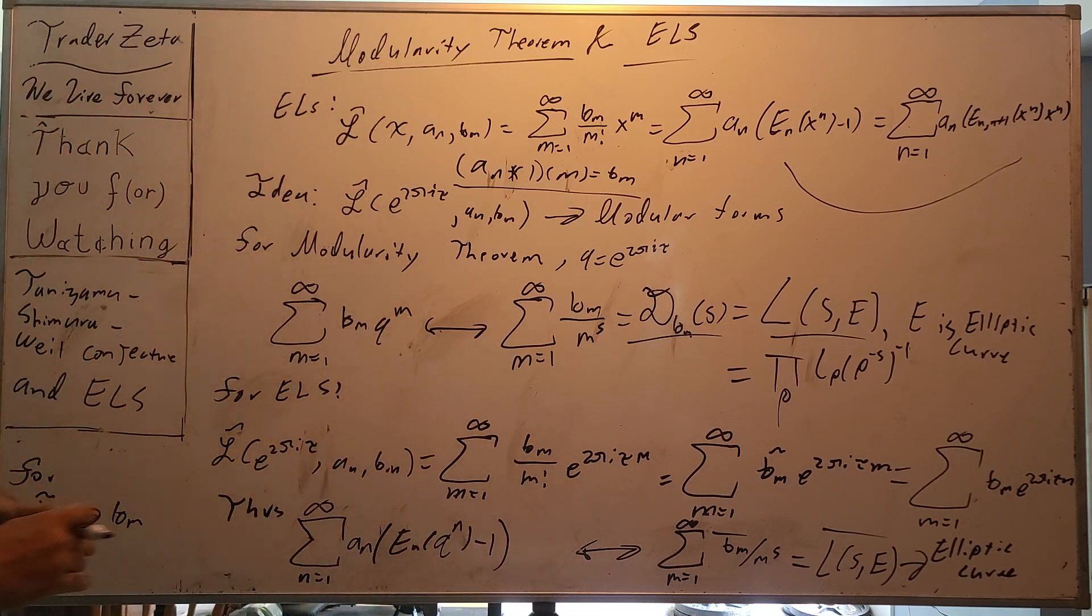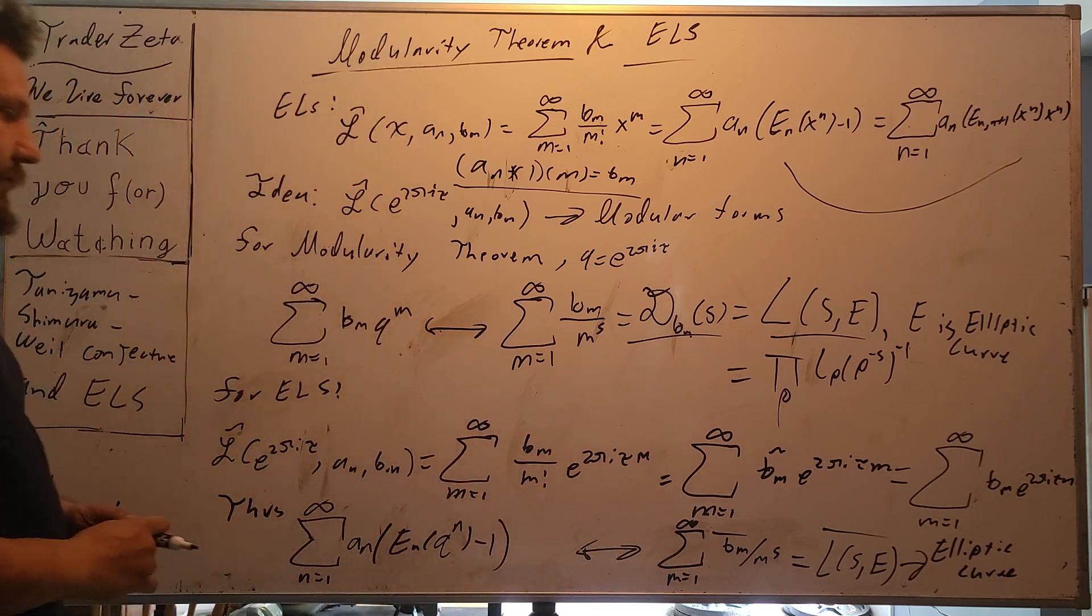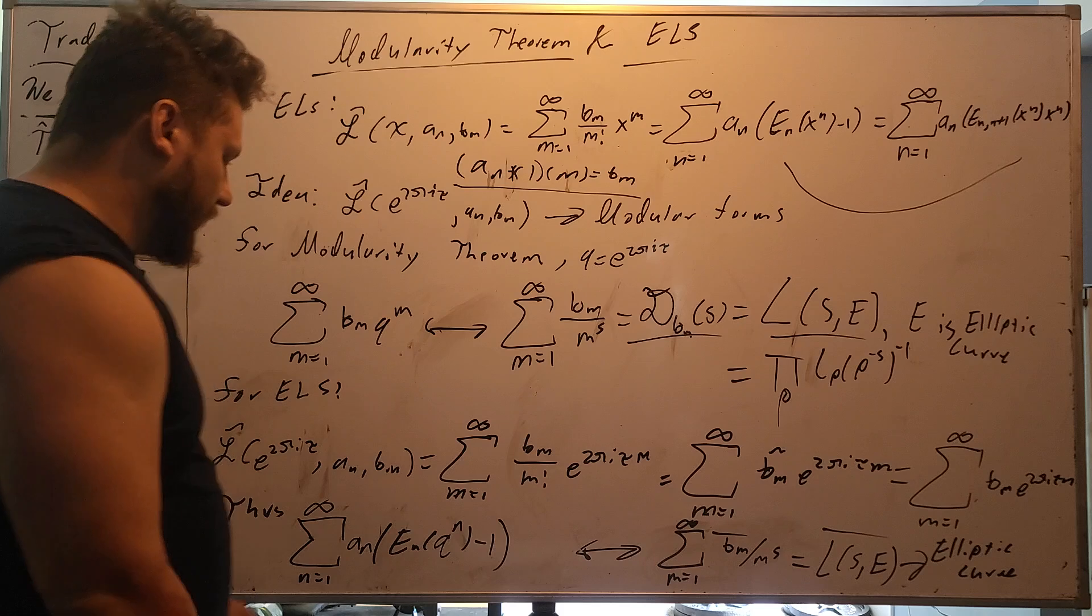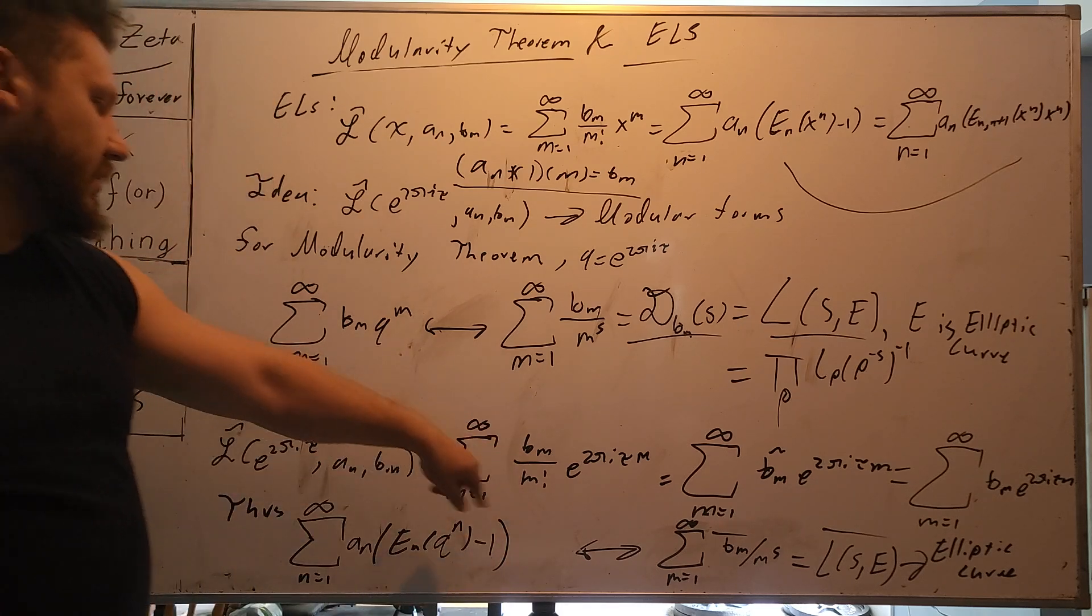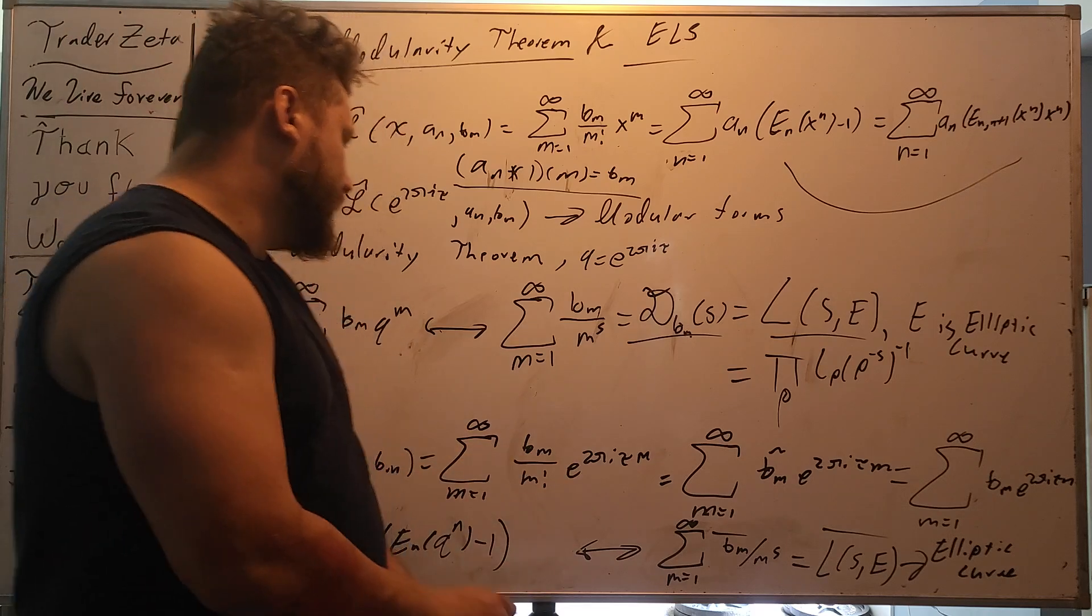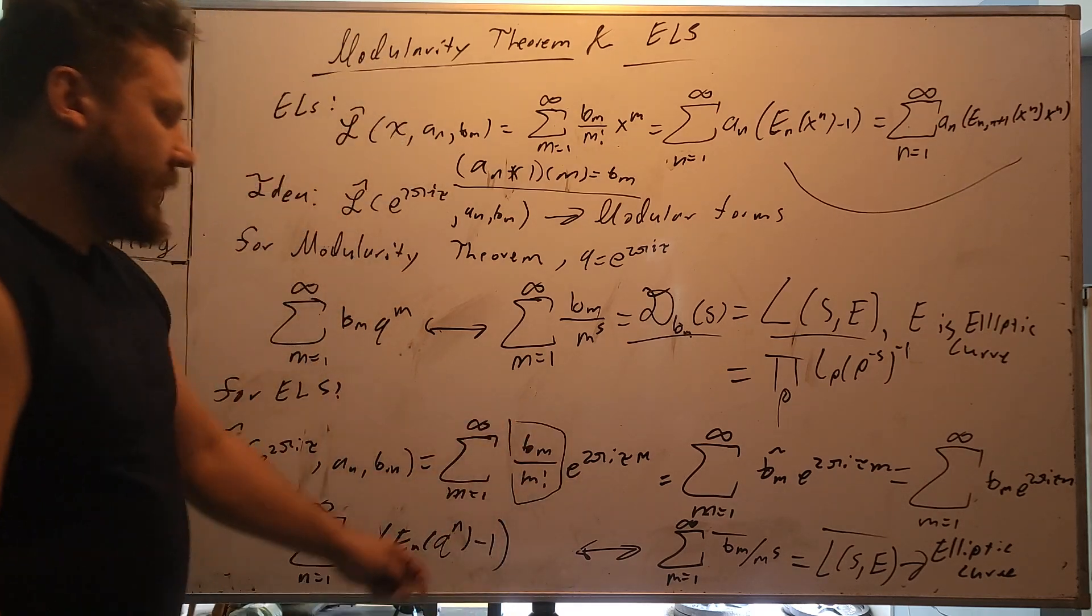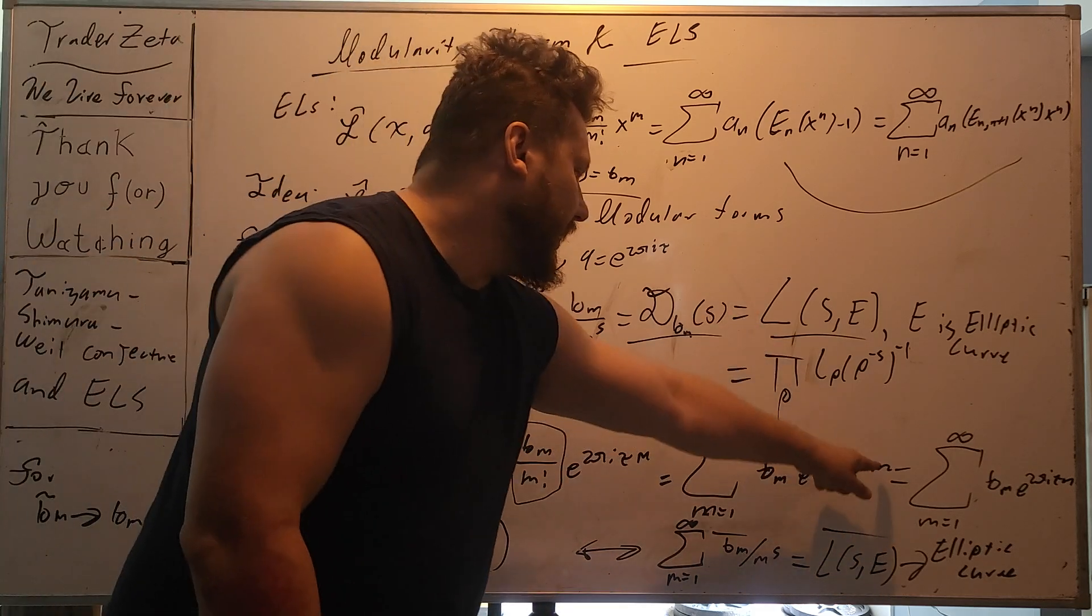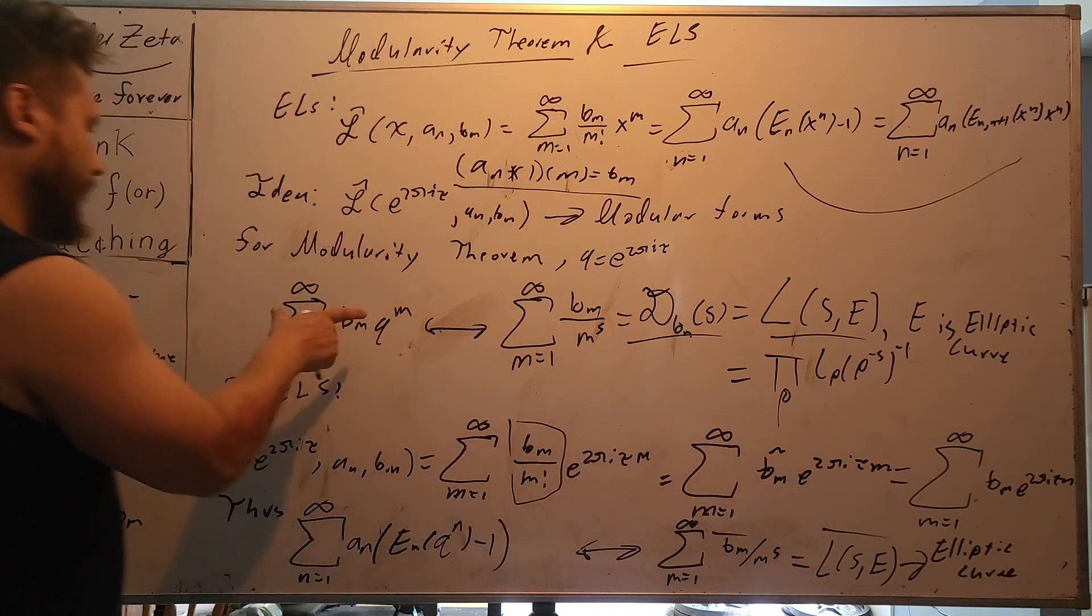One of the criteria that a modular form has is it has to have some type of Fourier expansion. And obviously, that definitely does. Sum m equals 1 to infinity, b_m divided by m factorial. These are the Fourier coefficients. And what we can do is we can pack this guy up right here, and we can say b_m tilde, e to the 2πim. But that right here is just this right here.